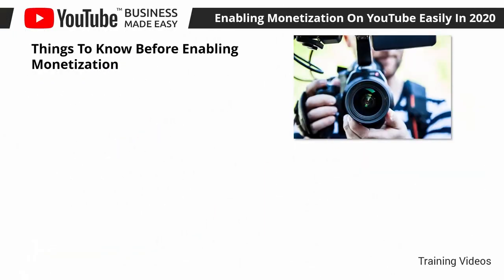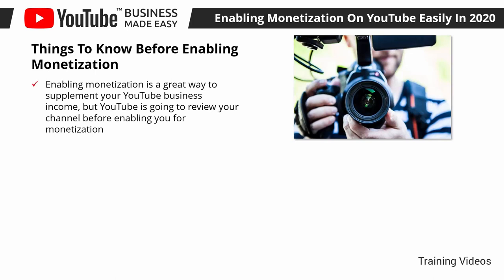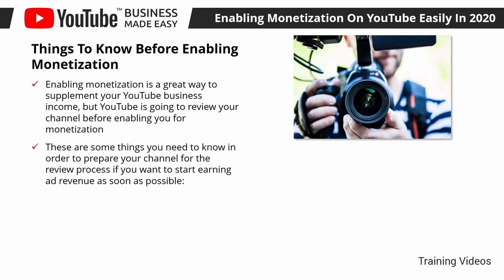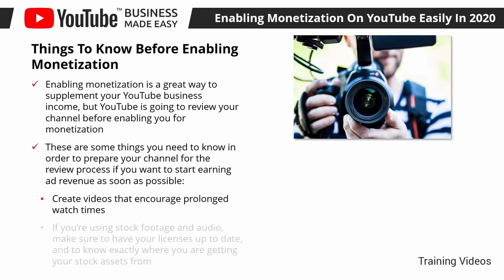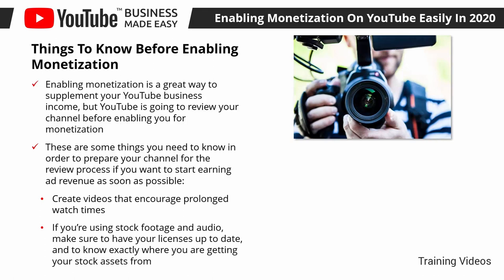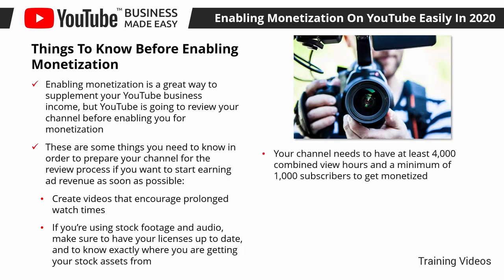Things to know before enabling monetization: enabling monetization is a great way to supplement your YouTube business income, but YouTube will review your channel first. If you want to start earning ad revenue as soon as possible, create videos that encourage prolonged watch times — videos between 6 to 25 minutes long depending on the topic. If you're using stock footage and audio, make sure to have your licenses up to date to avoid duplication claims. Your channel needs at least 4,000 combined view hours and a minimum of 1,000 subscribers to get monetized.